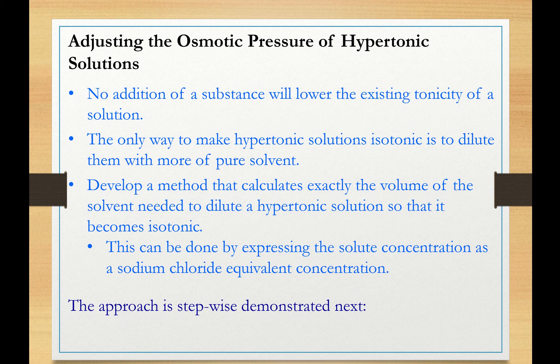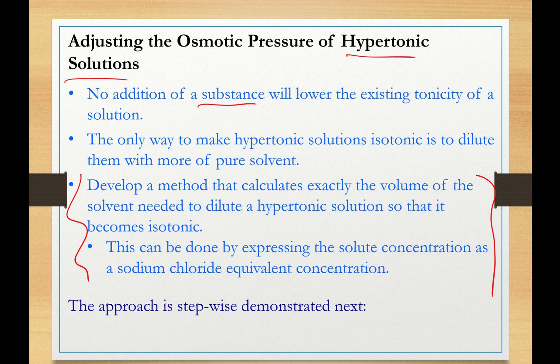Now let's move to the second method, which prepares isotonic solutions from hypertonic solutions. The only way to make a hypertonic solution isotonic is to dilute it — there is no way to add a solute that would lower the existing tonicity. We need to develop a method to dilute a hypertonic solution to the point that it becomes isotonic. This method is based on expressing the solute concentration as a sodium chloride equivalent concentration.